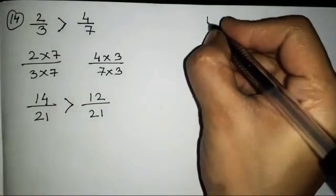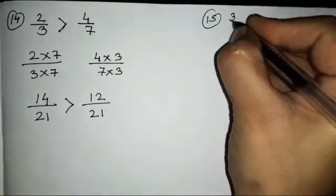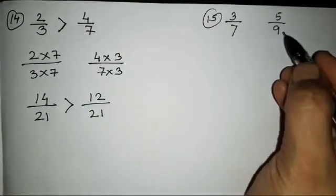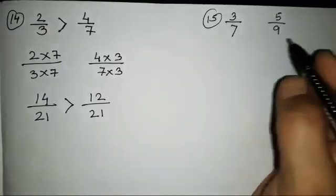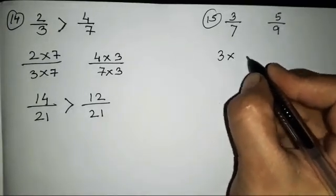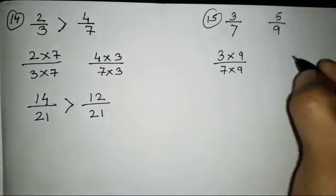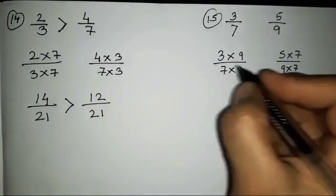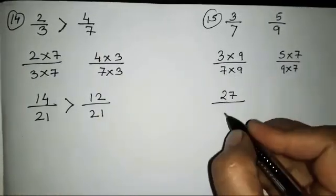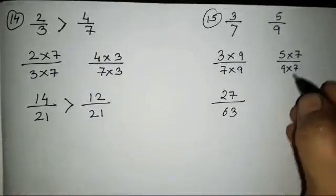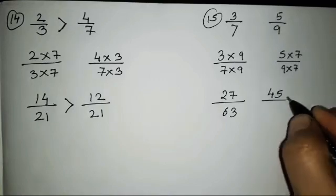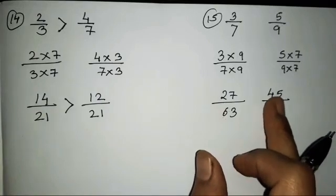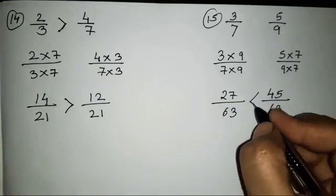The 15th sum is 3 upon 7 and 5 upon 9. Since 7's table doesn't give 9 and 9's table doesn't give 7, we cross multiply. 3 nines are 27 over 7 nines 63, and 5 sevens are 45 over 9 sevens 63. Which fraction is greater? 45 is greater, so 5/9 is greater.